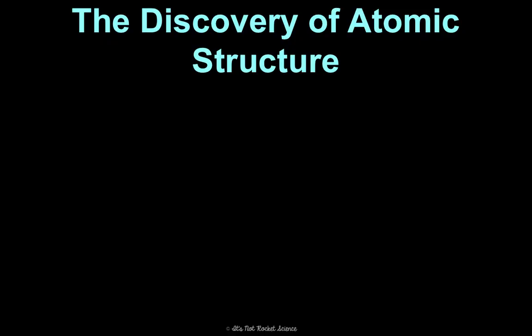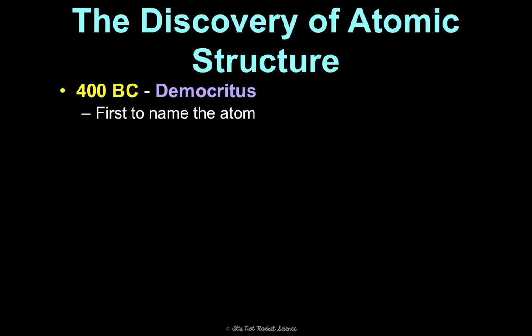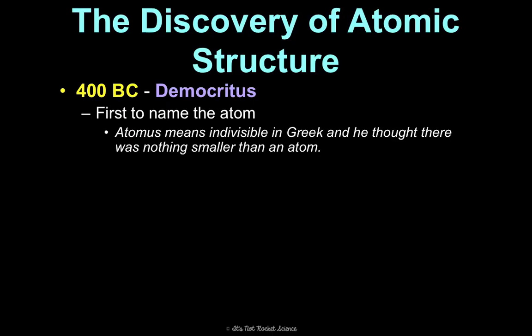I don't normally talk about a lot of history just for the sake of time, but understanding how we came about the discovery of atomic structure is a really important thing to know and to appreciate in terms of how scientific discoveries build and correct each other over time. You'll be expected to know it for assessments. In 400 BC, Democritus was the first to name the atom. Atomus means indivisible in Greek, and he named it the atom because he thought there was nothing smaller than it.